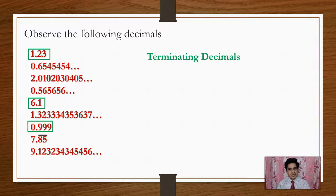There are other types of decimals also. For example, 0.654545 and so on, and 0.565656 and so on — these are Non-Terminating Recurring Decimals, where the digits repeat in a fixed pattern.